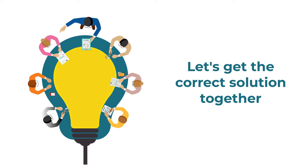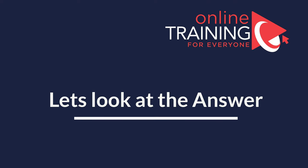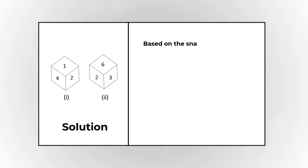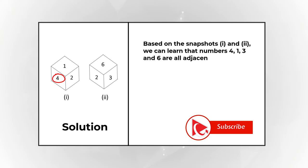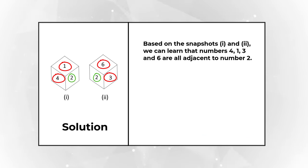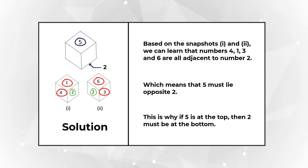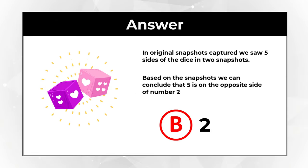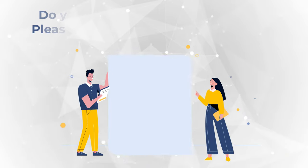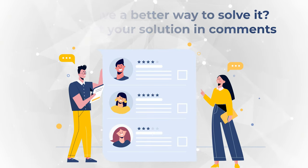To solve this challenge, take a close look at the dice snapshots. Based on both snapshots, numbers 4, 1, 3, and 6 are all adjacent to number 2. Since a dice has only 6 sides, we can determine that 5 must lie opposite of number 2. This is why if 5 is at the top, then 2 must be at the bottom. Please share your thoughts and how you solved this challenge in the comments.